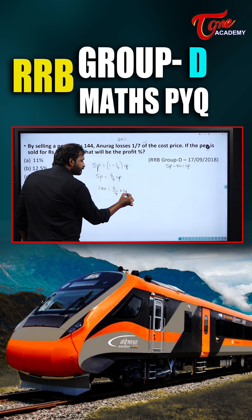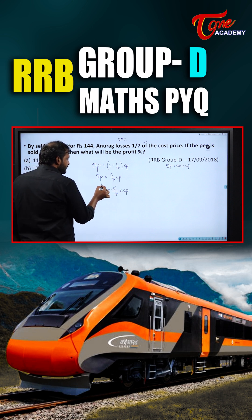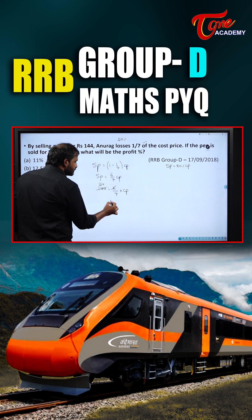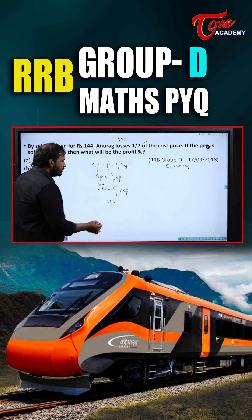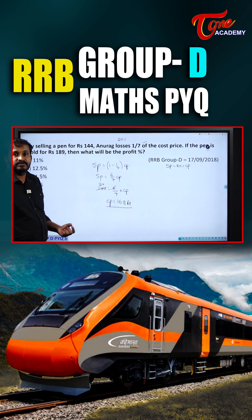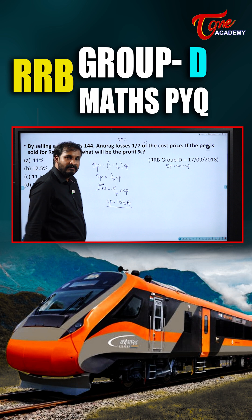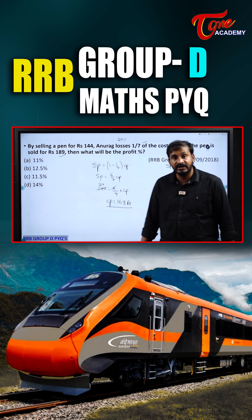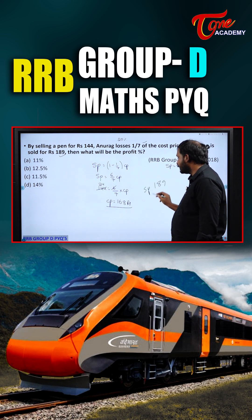Solving: CP = 144 × 7/6 = 168. So the actual cost price is ₹168. When he sells it for ₹189, we calculate the profit from SP = ₹189 and CP = ₹168.